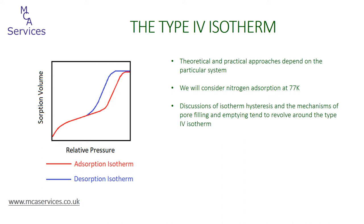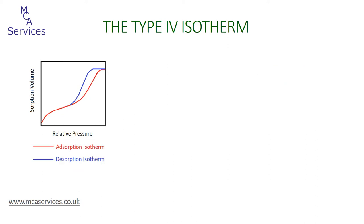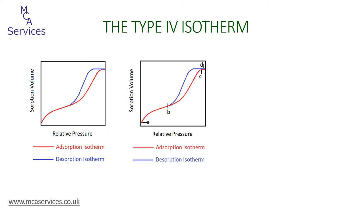Theoretical and practical approaches to gas sorption isotherms tend to revolve around the type 4 isotherm, which concerns sample materials that have mesoporosity. As adsorption proceeds from point A to point B, the isotherm profile is identical to that of the type 2 isotherm. At a certain pressure shown as point B, adsorption volume increases with relative pressure until point C is reached. After this the isotherm remains flat as saturation is closely approached at point D — this flat, gradual plateau is typical of the type 4 isotherm. As we've seen, the classic type 4 isotherm shows hysteresis between adsorption and desorption branches, and the precise shape depends on the porous nature of the sample material. As relative pressure is reduced during desorption, the isotherm is flat until point E, after which desorption volume decreases until the isotherm closes to the adsorption isotherm at point F.